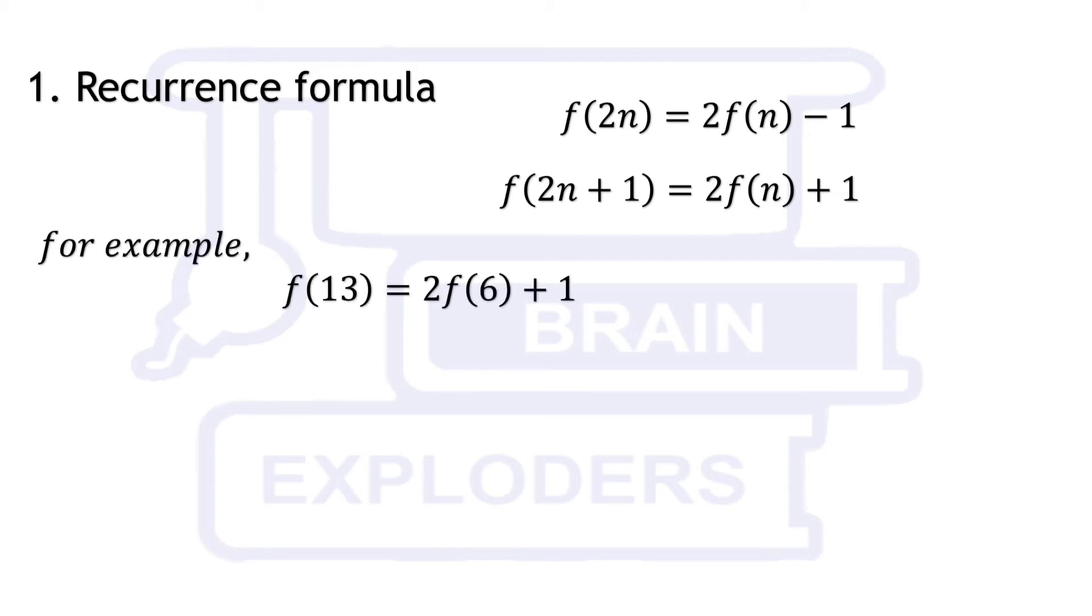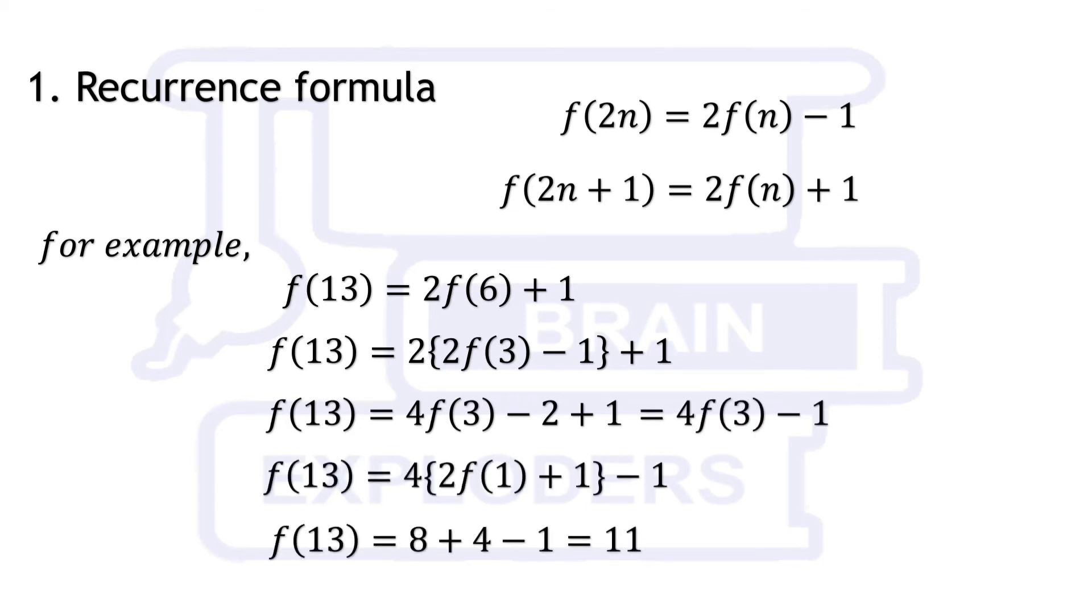It can be written as 2f(6) plus 1. f(6) can be written as 2f(3) minus 1. f(3) can be written as 2f(1) plus 1 and value of f(1) is 1. We get f(13) equals 11. You can check it by writing natural numbers from 1 to 13 and cancelling alternate numbers.